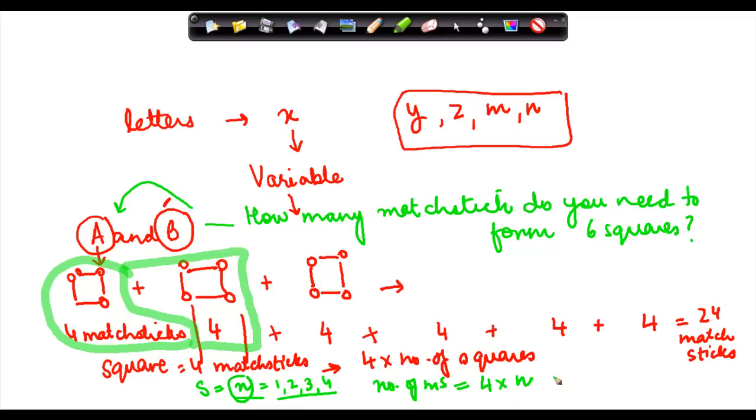So let us see whether this works or not. So say, okay, due to absence of space I'll just write here, if n is equal to 1, number of matchsticks which I am denoting by N is equal to 4 times n, which is 4 times 1 is equal to 4. And what do I find? This is correct.